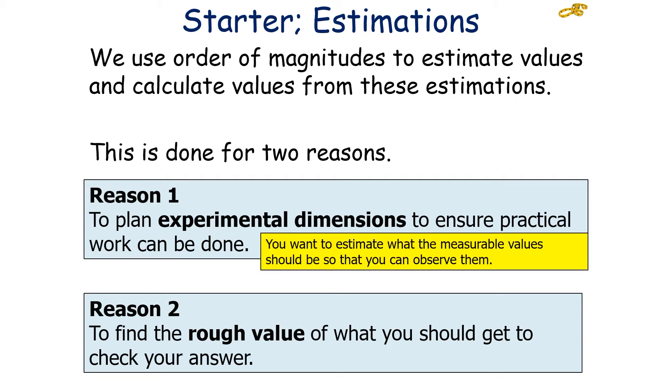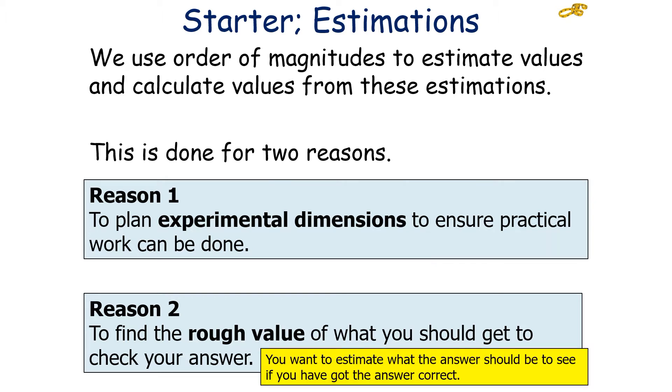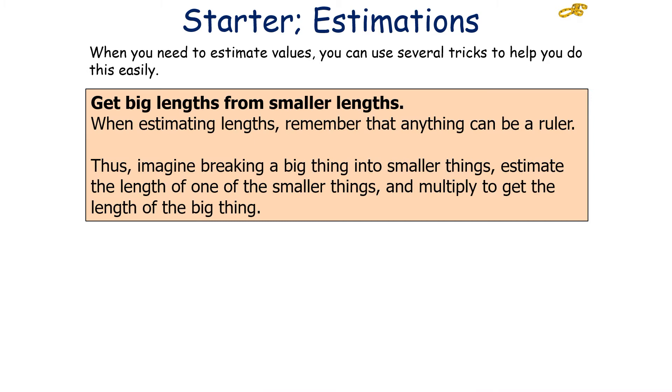For reason 1, you want to estimate what the measurable values should be in your investigation so that you can observe them. For example, if you estimate that it should take 60 seconds for the particular object to heat up, it allows you to understand when the observation will be taken. Reason 2 allows you to estimate whether the answer you should be getting is the correct answer. So if in an examination you calculate a value, you can estimate what the value should approximately be to see if your answer is in the right ballpark.